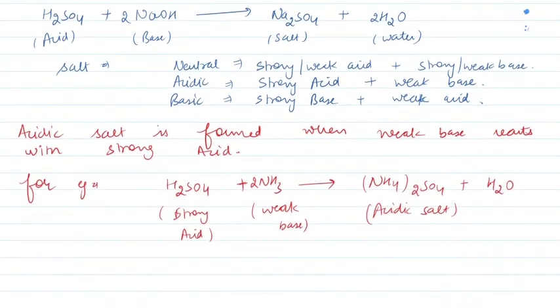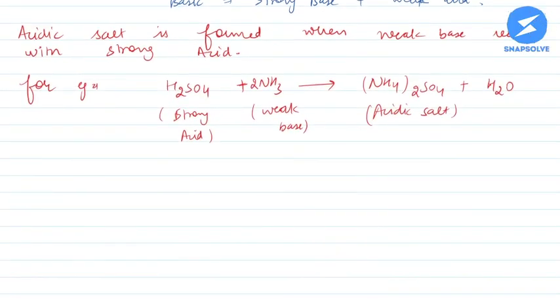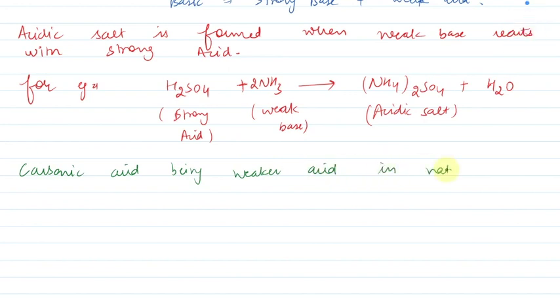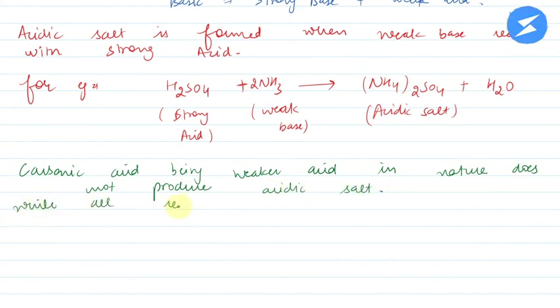Carbonic acid is a weak acid, so we can write that carbonic acid being a weaker acid in nature does not produce acidic salt, while all remaining are strong acids and they form acidic salts.